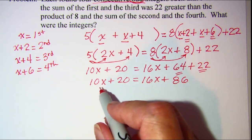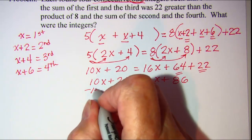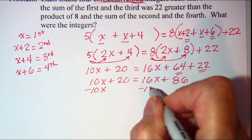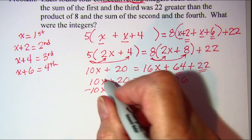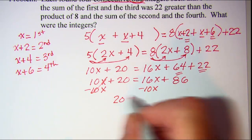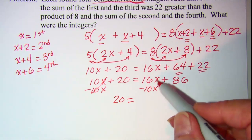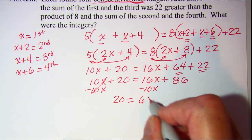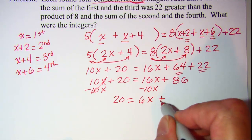I think I'm going to subtract 10x from both sides. I like to keep my x terms positive. So they'll go away on the left side and I have 20 equals 16x subtract 10x is 6x and then copy.